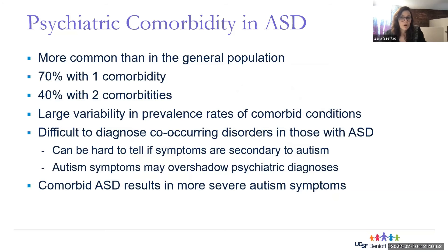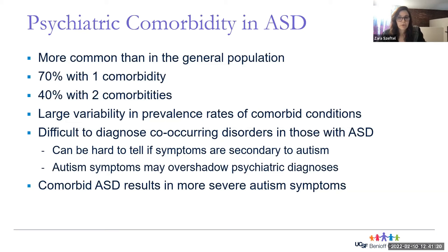Psychiatric comorbidity is much more common in individuals with autism than in the general population. Studies show that 70% of patients with autism have one psychiatric comorbidity and about 40% have two. There is large variability in estimated prevalence rates related to the heterogeneity of the population and the difficulty of diagnosing co-occurring disorders in autism. It can be hard to tell if symptoms are related to autism — for example, sensory issues and avoidant behavior may be interpreted as generalized anxiety, or autism symptoms can overshadow other mental health symptoms, such as irritability being attributed to autism rather than depression.